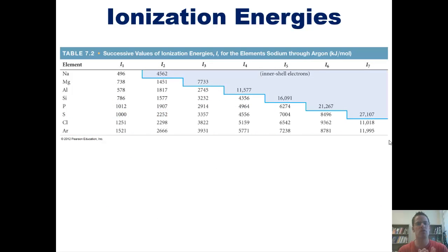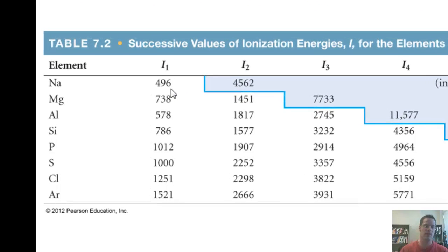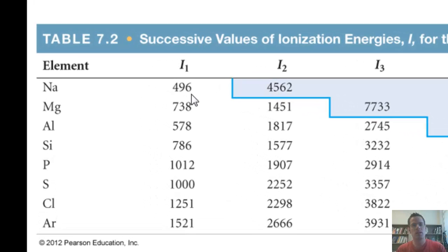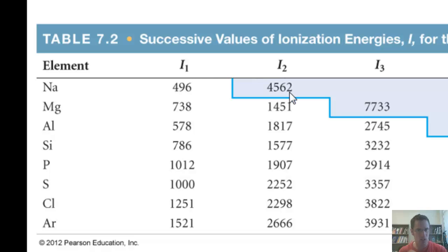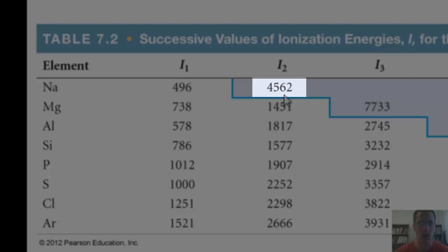This table shows us various ionization energies for different elements. Sodium, for example, you'd imagine would want to give up its first electron, because it wants to be isoelectronic with neon. But it still takes energy to remove that first electron — in fact, 496 kilojoules to remove that single electron from a mole of sodium. At that point, sodium now feels like neon. How much energy does it take to remove a second electron from sodium, making it Na²⁺? We can see that it takes a lot more energy.